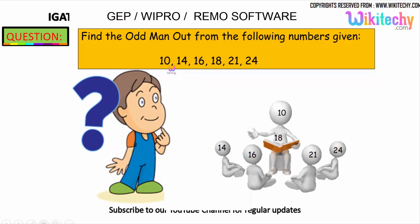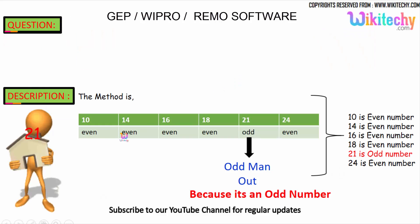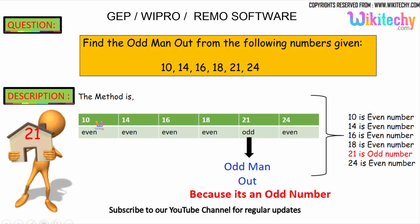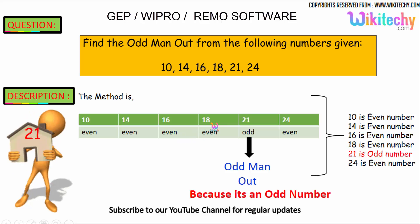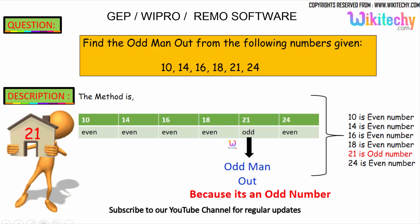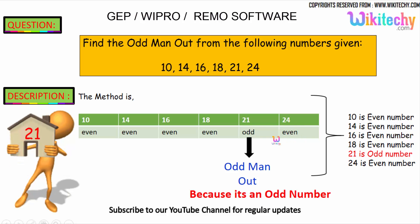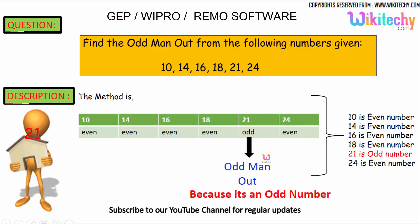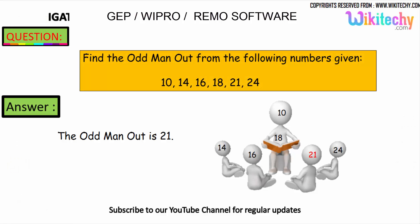Looks like these are all even numbers. We got 10 — even number, 14 — even number, 16 — even number, 18 — even number. 21 is an odd number. And 24 is an even number. So 21 is the odd man out here. The answer is 21.